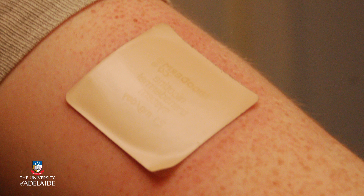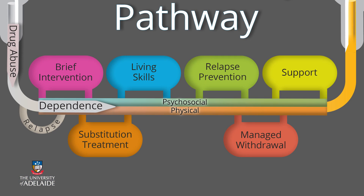Examples are nicotine replacement therapy to help with smoking cessation, and prescribed methadone or buprenorphine for opioid dependence. Substitution treatment suppresses withdrawal and cravings and allows the individual who is dependent to address the psychosocial dimensions of their addiction without the physical compulsion to use drugs.